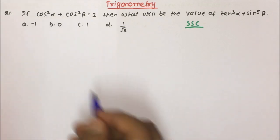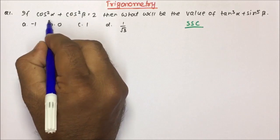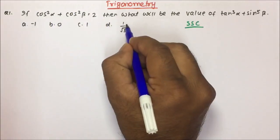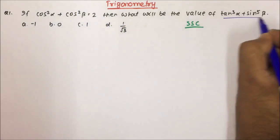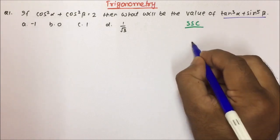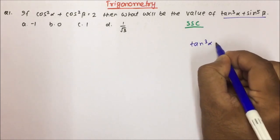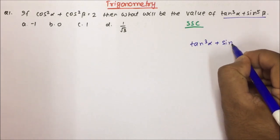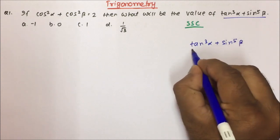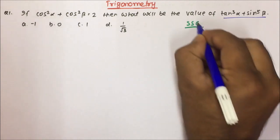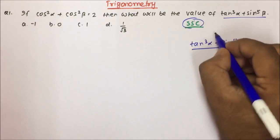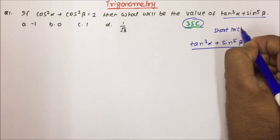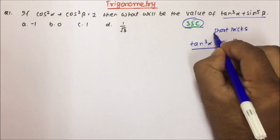Now, what they are telling? cos²α + cos²β = 2. Then what will be the value of tan³α + sin⁵β? This question has been asked in SSC. If you do not know the short tricks, it will be very difficult to solve.